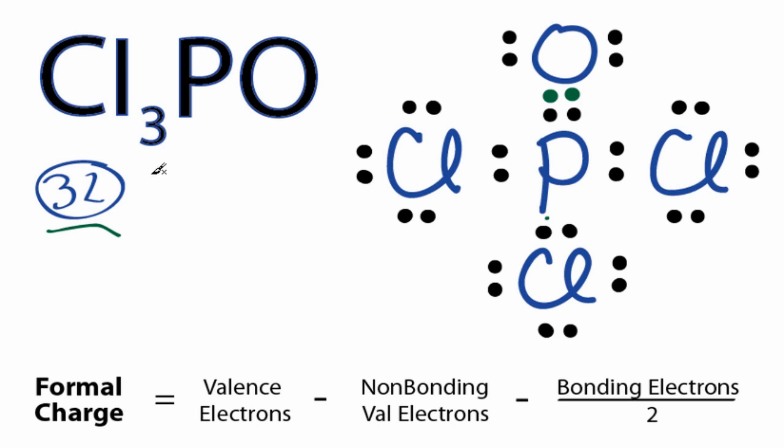But now if you recalculate the formal charges for each of the atoms, you'll find that they're all 0, and this is what we want. The formal charges closer to 0 mean a more plausible or likely Lewis structure. So we've used all 32 valence electrons. Each of the atoms have octets, and our formal charges are 0. That makes this the most plausible or likely Lewis structure for Cl3PO.